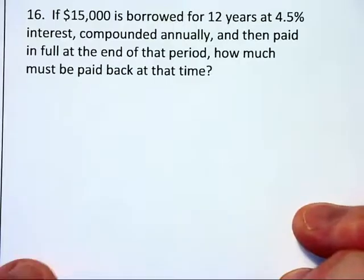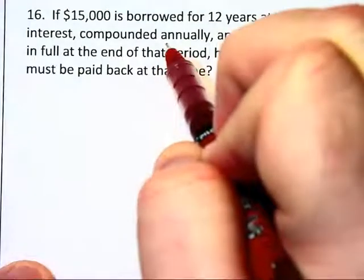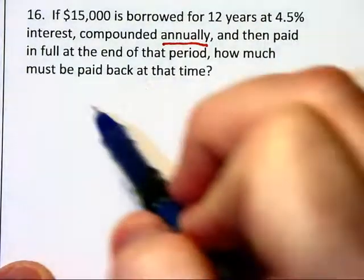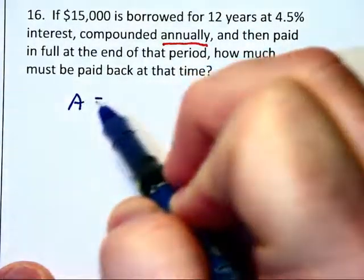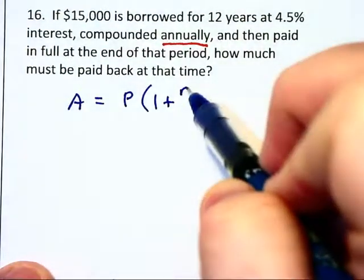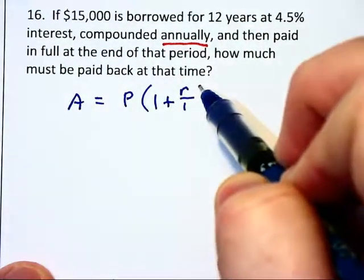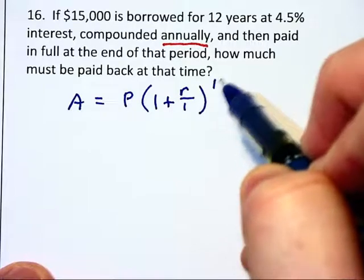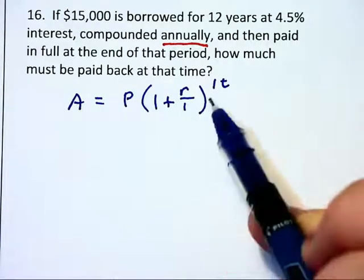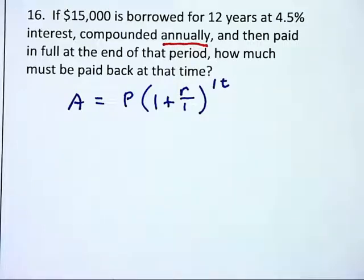Let's do another interest problem. Again this is compounding annually, so we are going to use the same formula we had above. The amount of money will be principal times 1 plus, and I am actually going to write this as R over 1 to start getting you used to this, raised to the 1t power. We don't really need those ones there, but later on those ones will change to another number.